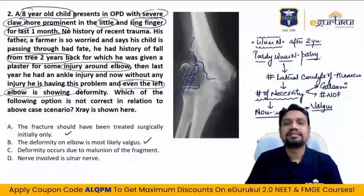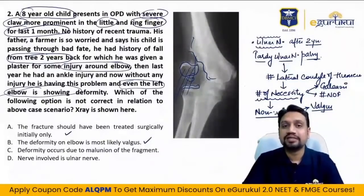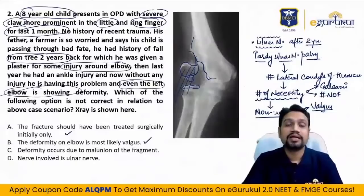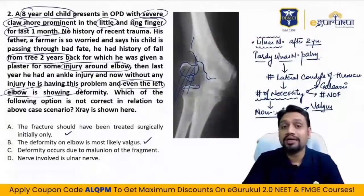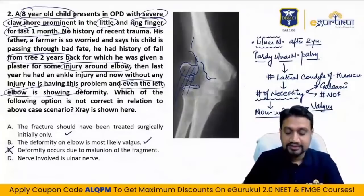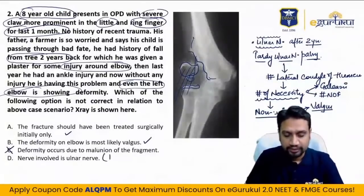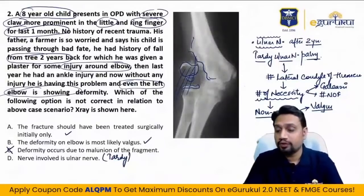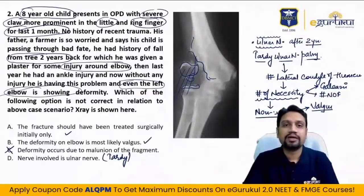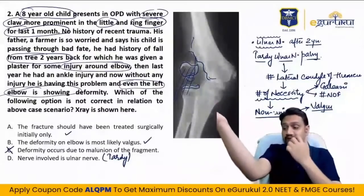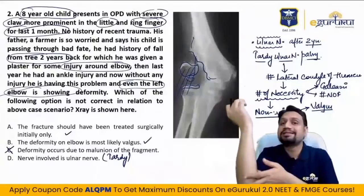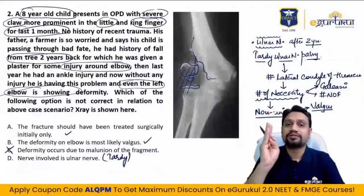Malunion is a feature seen with metaphyseal injuries like Colles' fracture and supracondylar humerus fracture. Metaphyseal areas have high chances of union because metaphysis is the most vascular area of bone. Supracondylar and Colles' fractures always unite — so malunion is a feature of supracondylar, not lateral condyle. The nerve involved is the ulnar nerve — tardy ulnar nerve palsy is a late involvement.